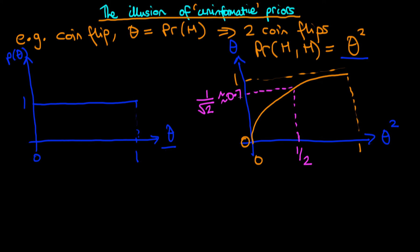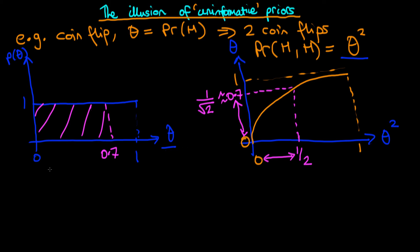That value is one over root two, the square root of a half, which is approximately 0.71. Because of the monotonicity of our curve — it's always increasing — the theta squared values between zero and a half correspond to the theta values between zero and 0.71. So we've only gone about half of our range in theta squared but we've gone almost three quarters of our range in terms of theta. This means the probability mass is going to be squashed for theta squared relative to that of theta, and squashed to the left.